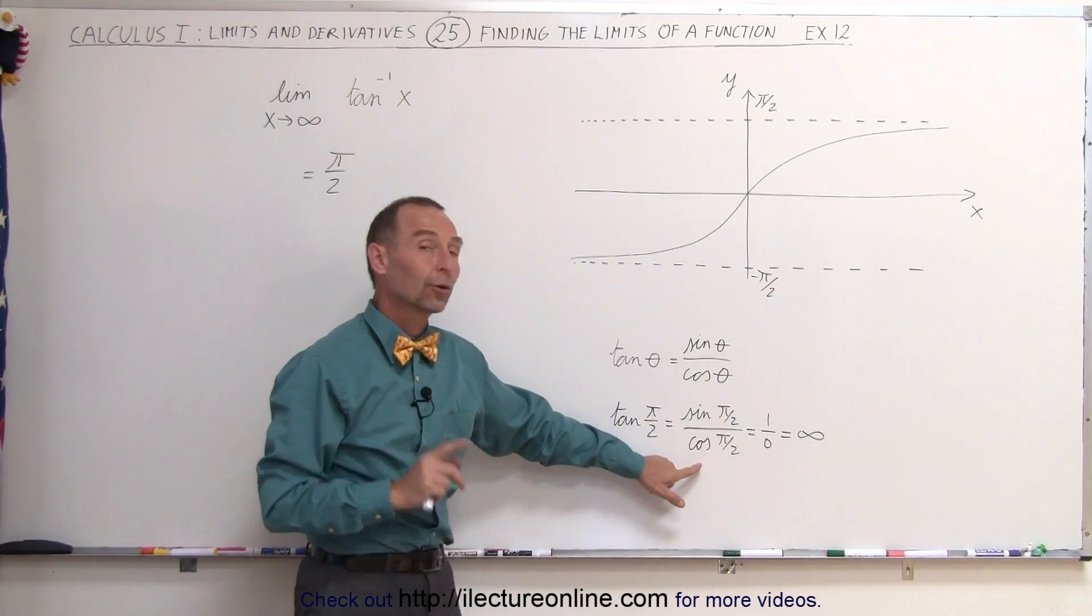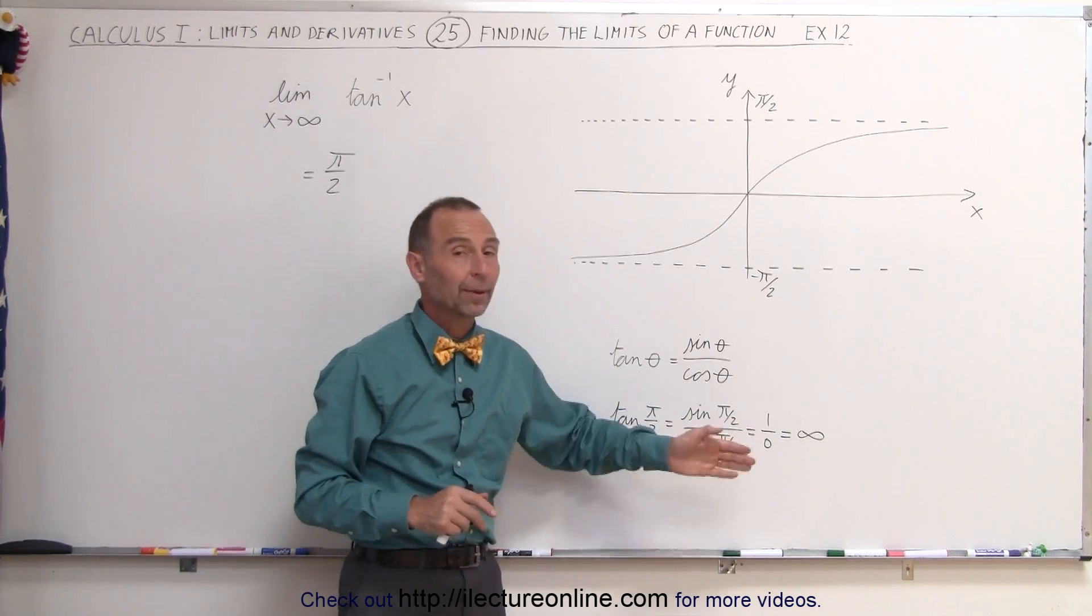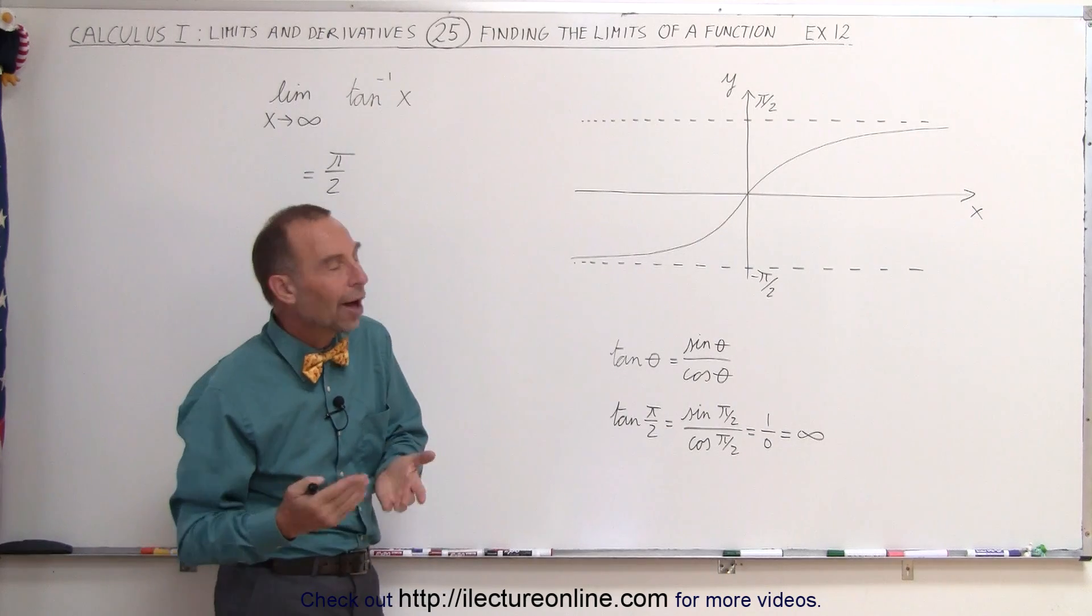The sine of pi over 2 is 1. The cosine of pi over 2 is 0. 1 divided by 0 is infinity or undefined.